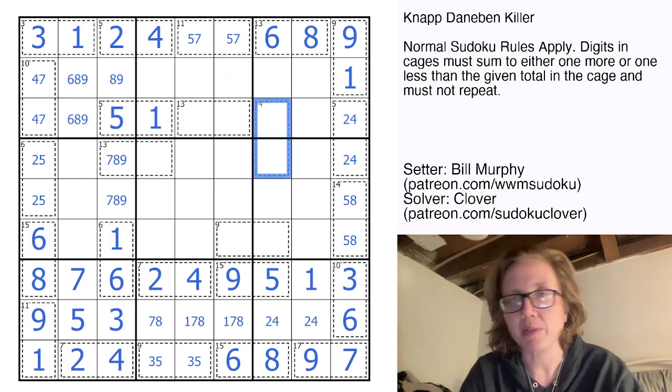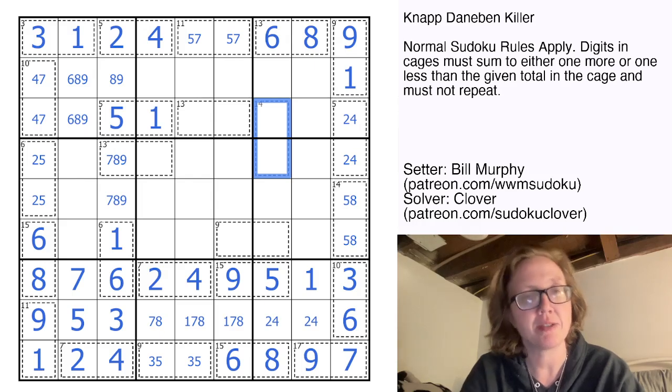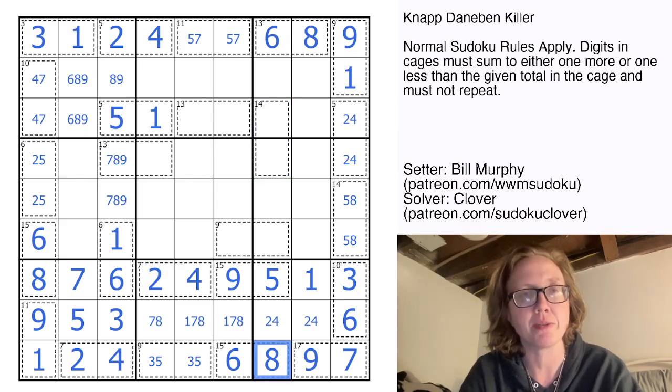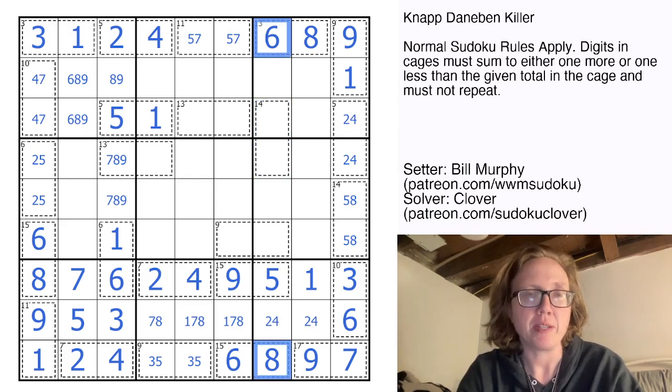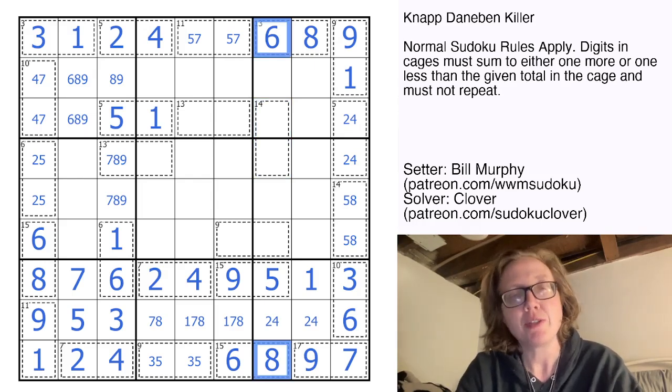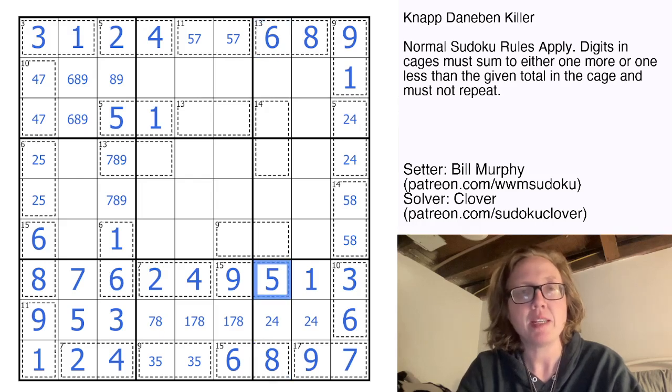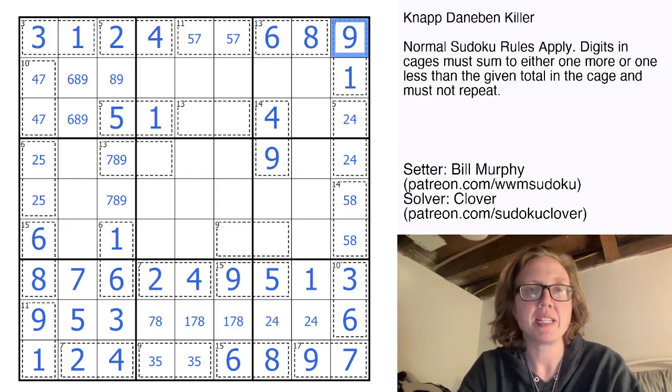Fourteen can't go up by one because we can't do six plus nine in the column, and we can't do seven plus eight in the column because six and eight are both taken. So we're going to have to go down by one to 13. We could do four plus nine. Can't do five plus eight, can't do six plus seven.